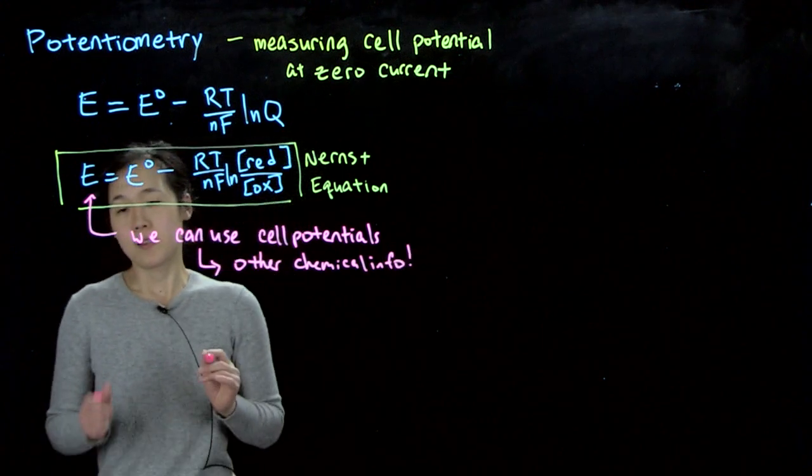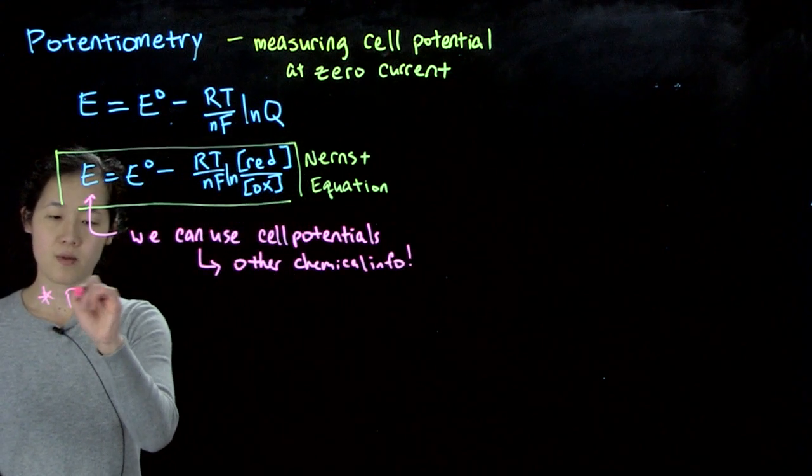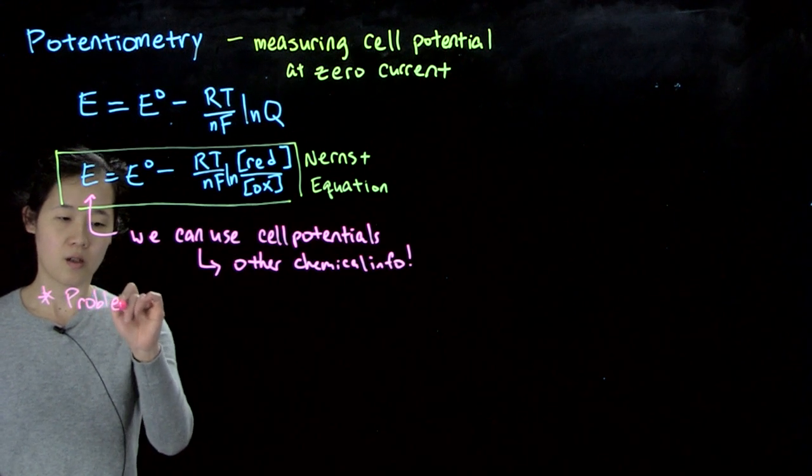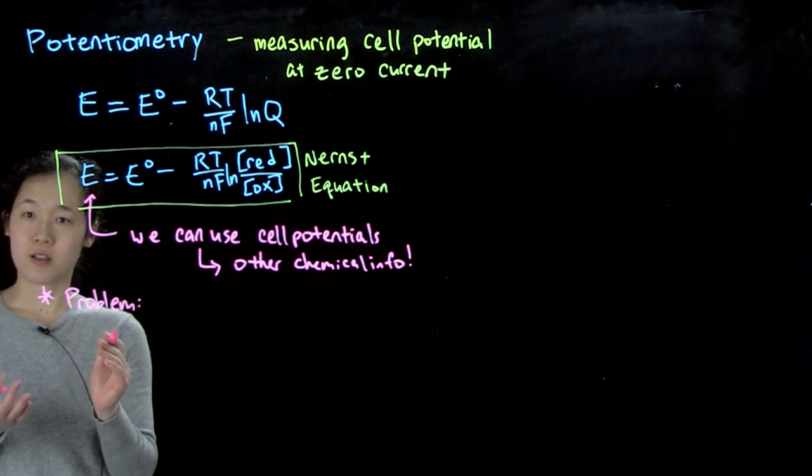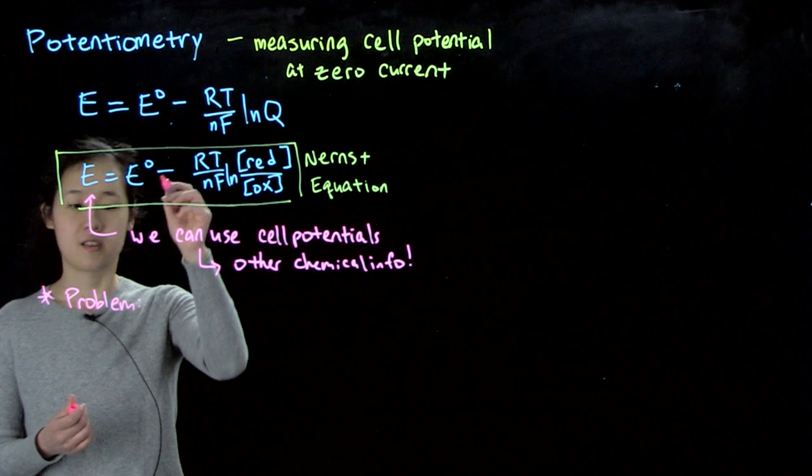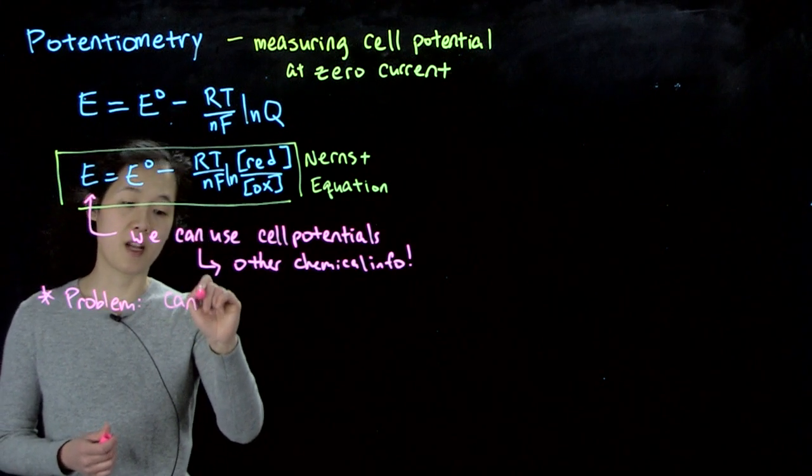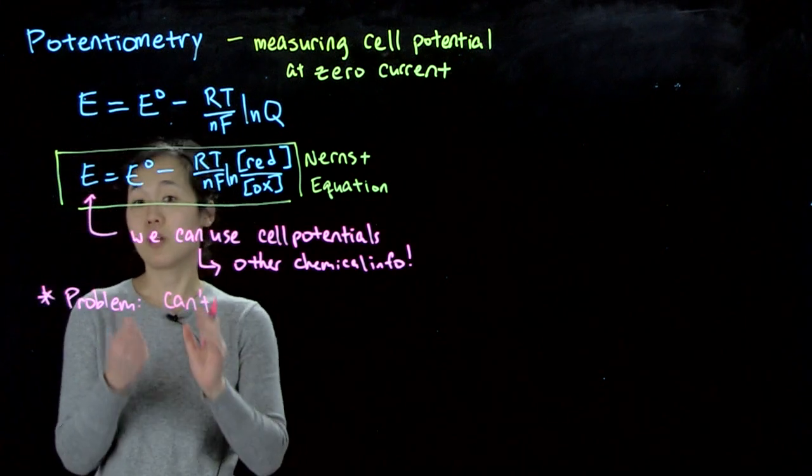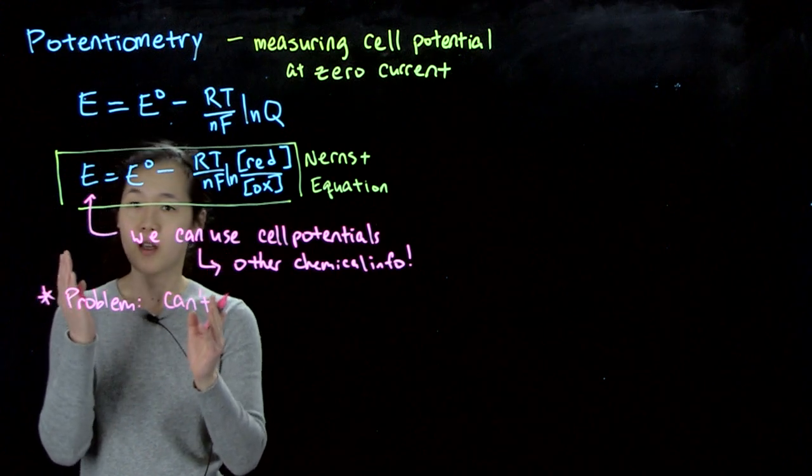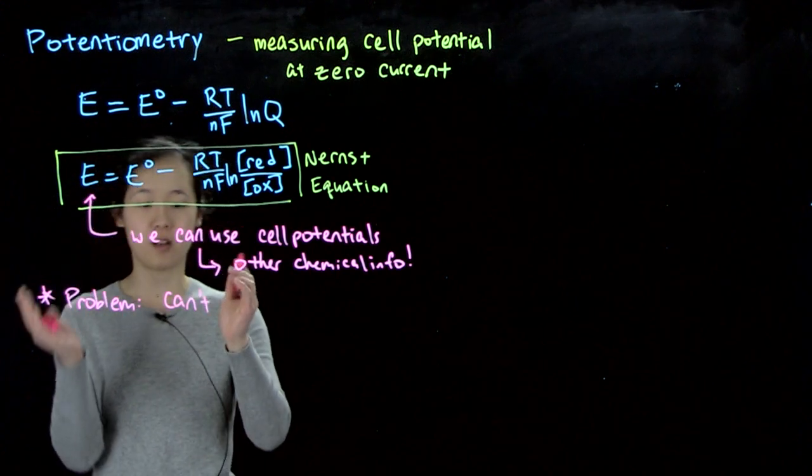OK, so the problem is that again we can't measure half reactions, the potentials of half reactions directly, right? We can only measure a cell potential, and that's going to be of two competing half reactions, an oxidation and a reduction.